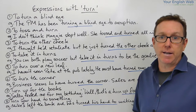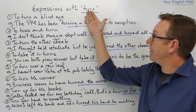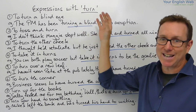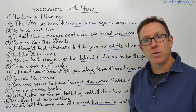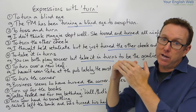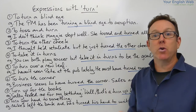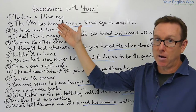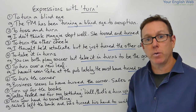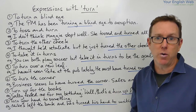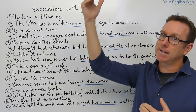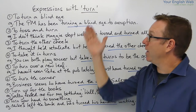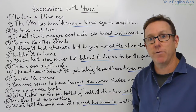Today's lesson is looking at expressions with the verb turn — idioms that use this particular verb. When your English level gets to that high B2, C1, C2 level, you need to know what these expressions mean, and you also need to incorporate them into your speech and your writing in order to take your English to the next level. Today I'm going to show you some of the main phrases with this verb.